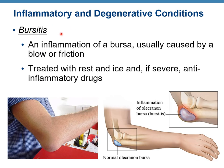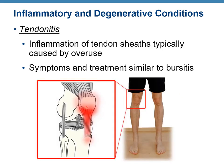Bursitis is inflammation of the bursa, usually caused by a blow or friction. Here you can see the olecranon bursa — the normal one and an inflamed olecranon bursa, which is bursitis. This is how the elbow of a patient would look. Treatment is rest and ice, and if severe, anti-inflammatory drugs. Tendinitis is inflammation of the tendon sheath, typically caused by overuse, with similar symptoms and treatment: rest, cold, and possibly anti-inflammatory drugs.